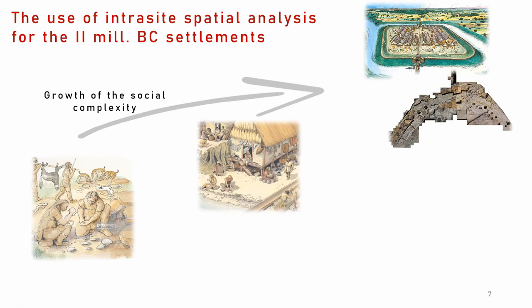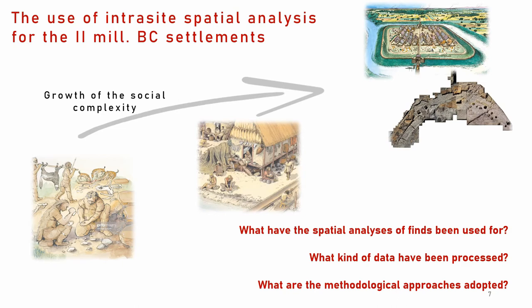I will briefly discuss some case studies related to the second millennium of Italian settlements. During the Bronze Age, communities of the Italian Peninsula and the Aegean Island experienced a demographic growth and emerging social complexity. They were increasingly involved in long-range exchange networks, some of which established by the more complex communities of the Aegean area. The settlement dimension and complexity reflect these social developments. So, what have the spatial analyses of finds been used for? What kind of data have been processed? What are the methodological approaches adopted?